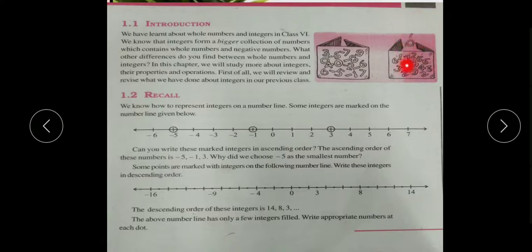If we include 0 in it, then it will become whole numbers. Zero with all positive numbers are whole numbers. And if we include negative numbers also - here there is 0, all positive integers, and all negative integers.